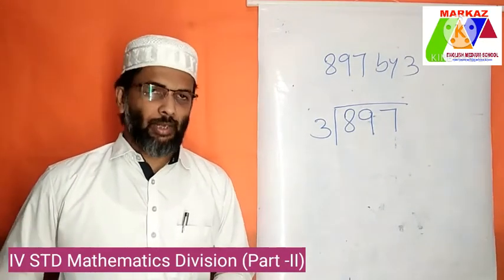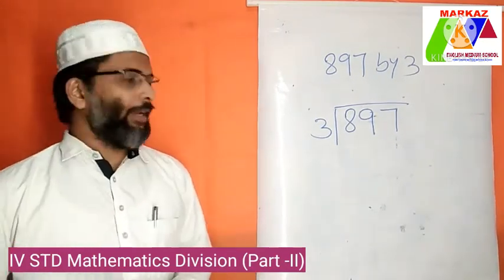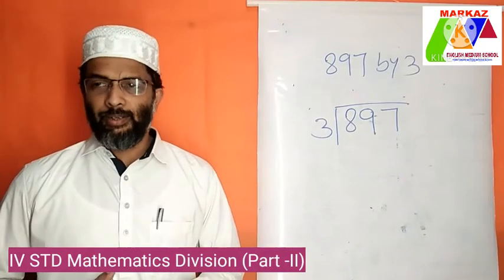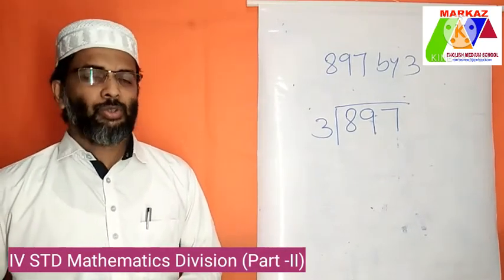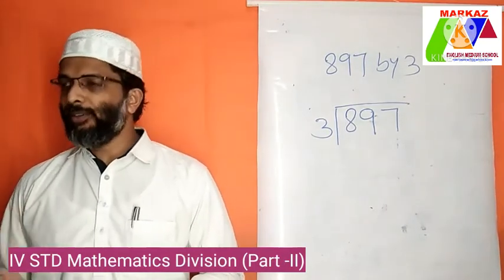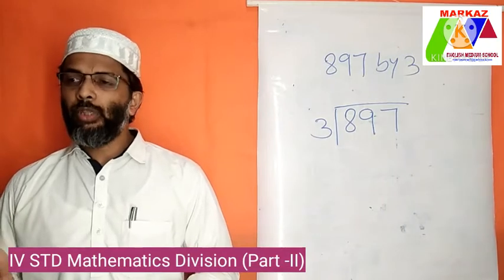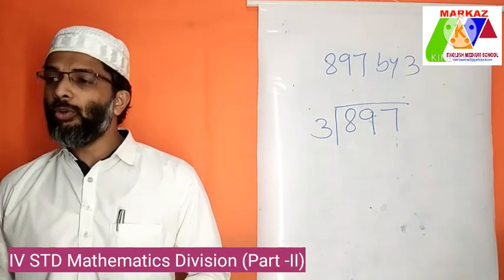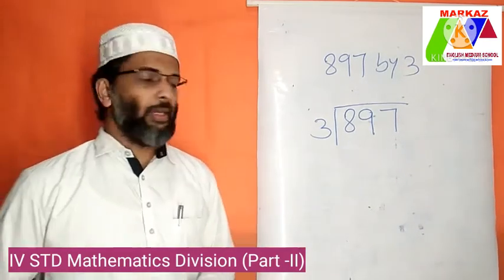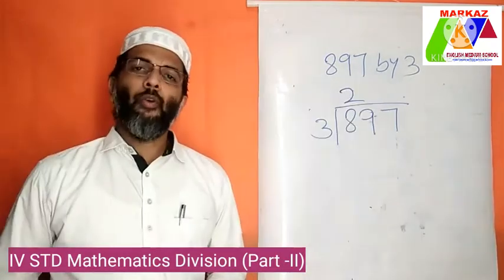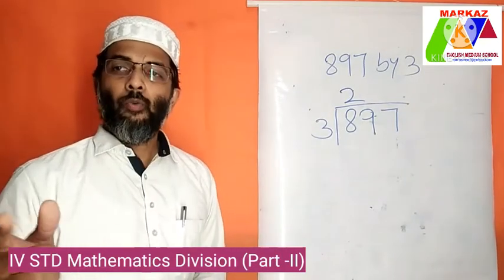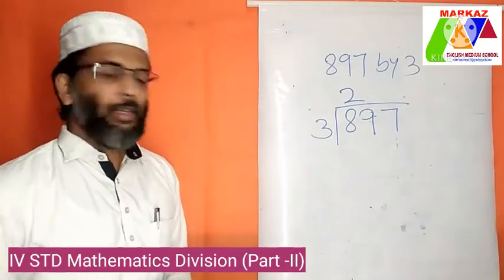First, we look at how many times 3 goes into 8. How many times does 3 go into 8? 3 threes are 9, 2 threes are 6. So 2 times. Make sure you use a factor which gives you a multiple that is either equal to or less than the dividend. Write 2 here as the quotient. The next step is to multiply the quotient and the divisor. What is 2 into 3? It is 6.